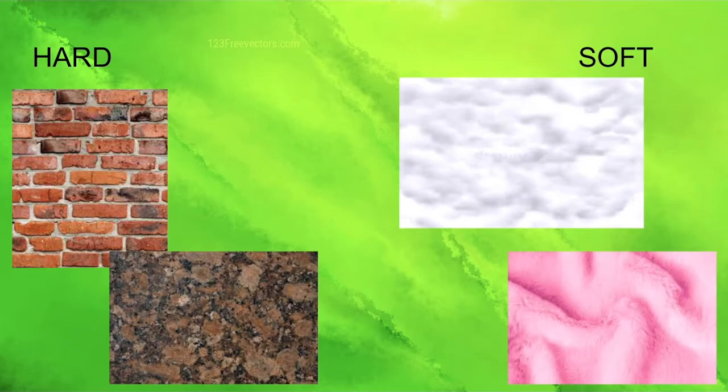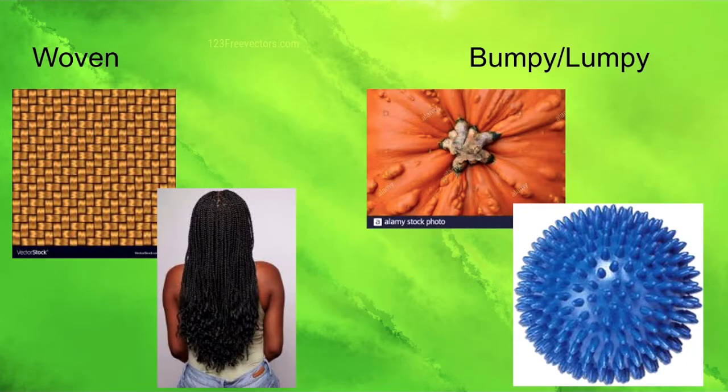We're not going to say rough, but strong. Then maybe like the softness or the smoothness of like fuzzy fur or clouds or cotton. Woven versus bumpy or lumpy. Like the woven of like baskets or braids. Lumpy kind of the example here. We've got that spiky ball or the lumpiness of pumpkin.